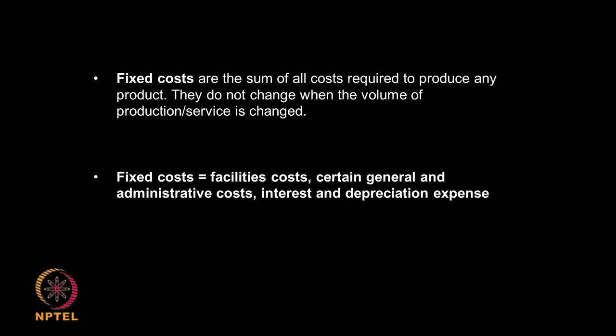There is something called fixed cost and variable cost. Fixed costs are costs required to produce any product — they do not change based on the volume of the product. Whether I make 100 tons per year or 120 tons per year, the fixed cost will always be fixed. For example, if I am putting certain facilities or administration, I am not going to change the number of people whether I am making 100 tons or 120. I will be paying some interest on loans and there will be depreciation expense — all these will be fixed irrespective of production volume. These are called fixed cost.